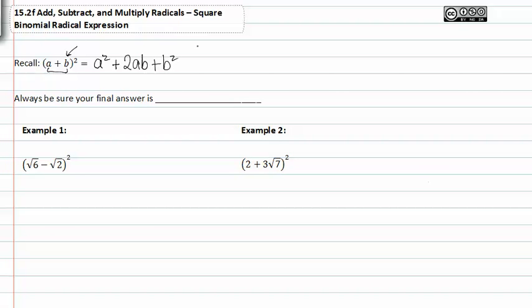You should always be sure your final answer is simplified. So now that we recall this rule for a binomial squared, we're going to use it when we are solving or simplifying example one and example two.